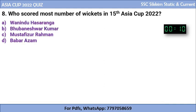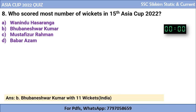Question 8: Who scored the most wickets in the 15th Asia Cup 2022? The options are Wanindu Hasaranga, Bhubaneswar Kumar, Mustafizur Rahman, or Babar Azam. The correct answer is Bhubaneswar Kumar with 11 wickets, who is from India. Indian bowler Bhubaneswar Kumar took the most wickets in the 15th Asia Cup 2022.